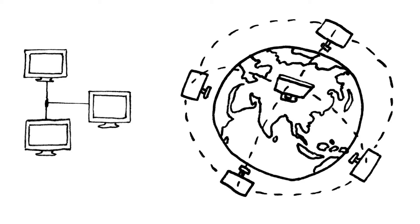A computer network can be wireless or wired and it's not the same thing as the internet. Most of the time, a network is contained within one building, whereas the internet consists of lots of different networks all over the world connecting together.